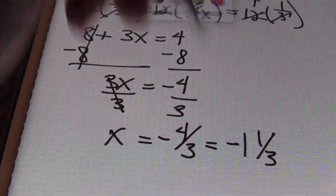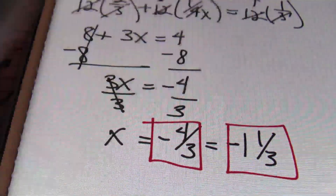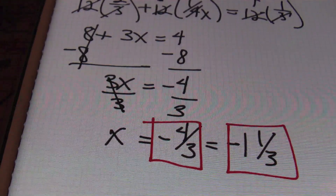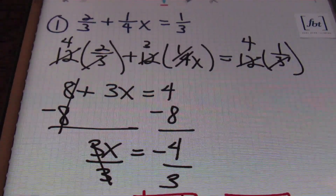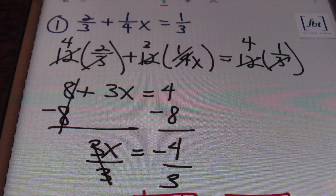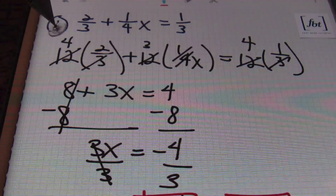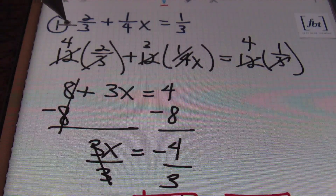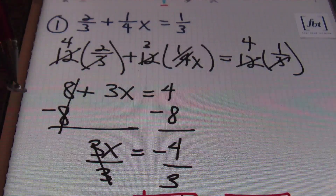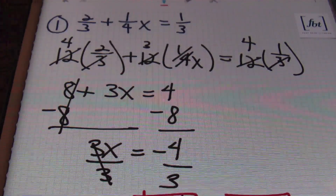Either of these answers would be correct. In most algebra classes, the improper fraction is going to be just fine. However, you may have an instructor who prefers a mixed number. Either way, that's the answer. We started out with number one, multiplied everything by the least common denominator — the LCD — which is 12, the first number that three and four go into evenly. By multiplying each and every term by that common denominator, you eliminate all the fractions and simplify it into the easy equation eight plus three x equals four, and can go straight to the answer.